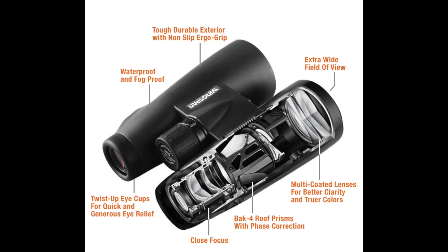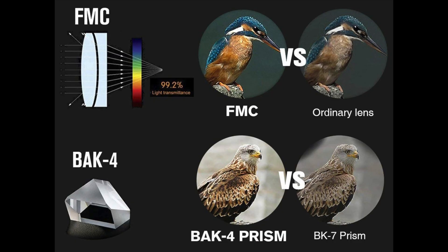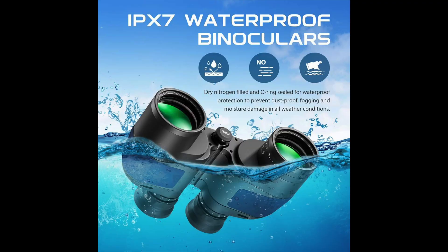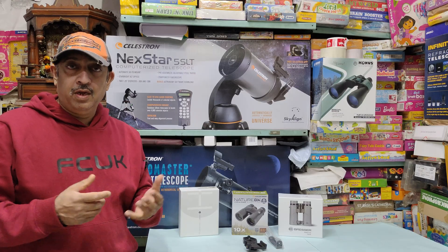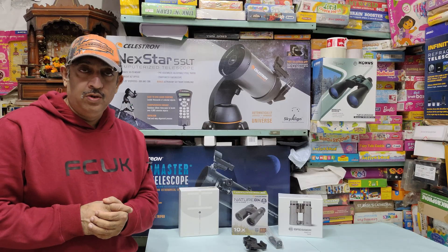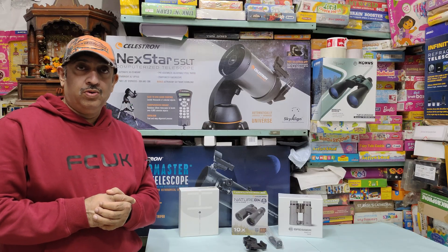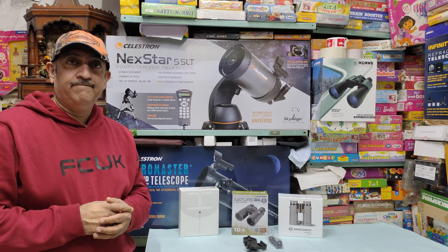If there are coatings in it, that is good. The picture is sharp. Normally there is nitrogen gas filled in the binoculars, so there is no water or dust inside. There are anti-fogging properties.